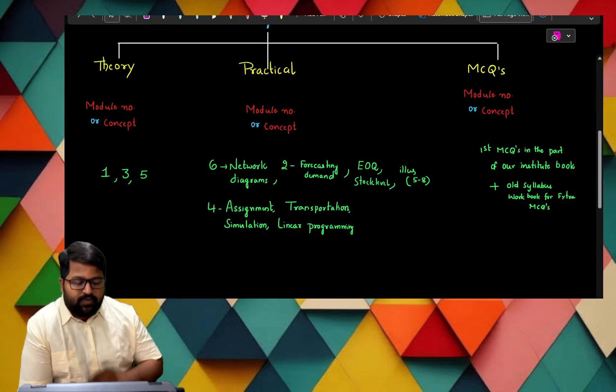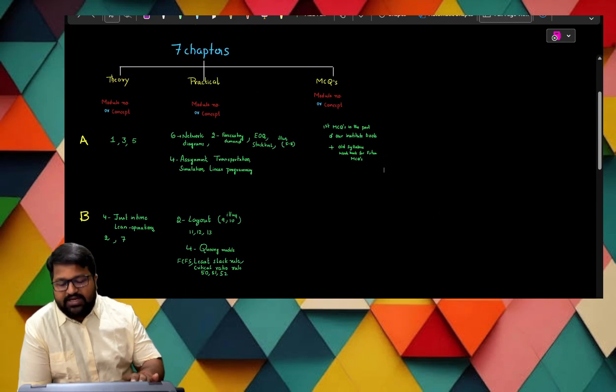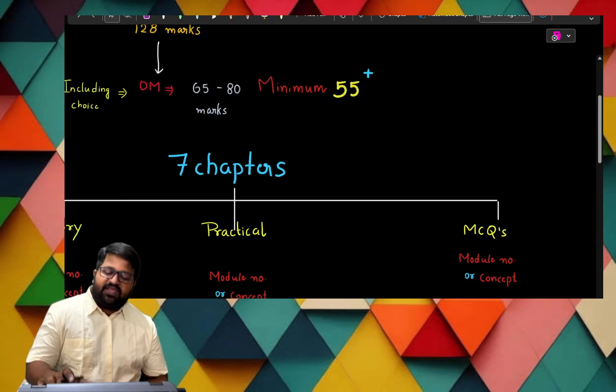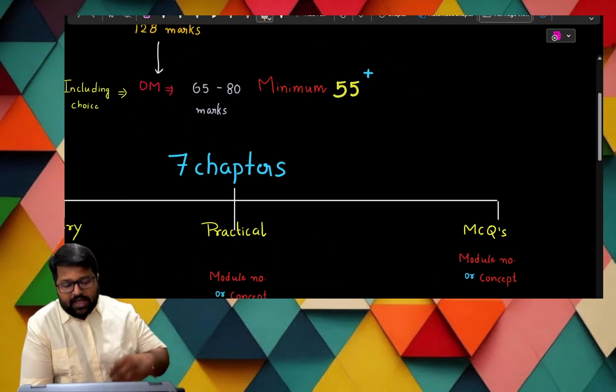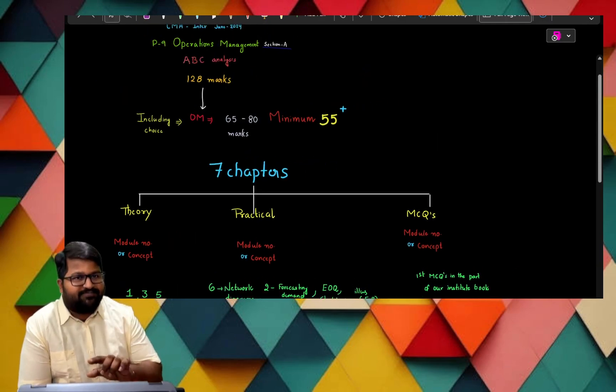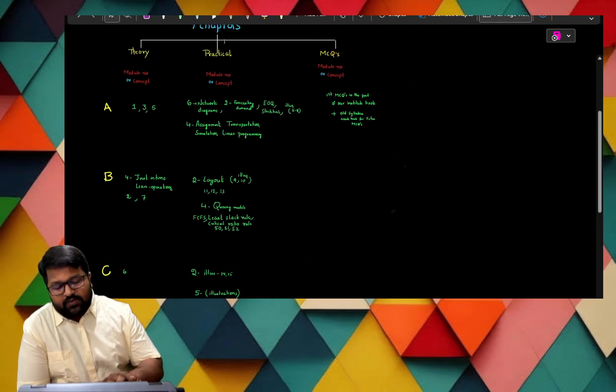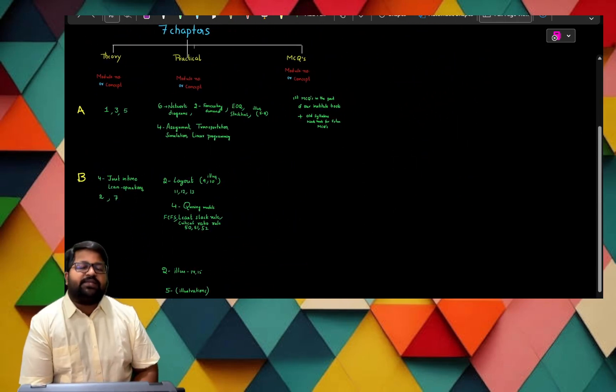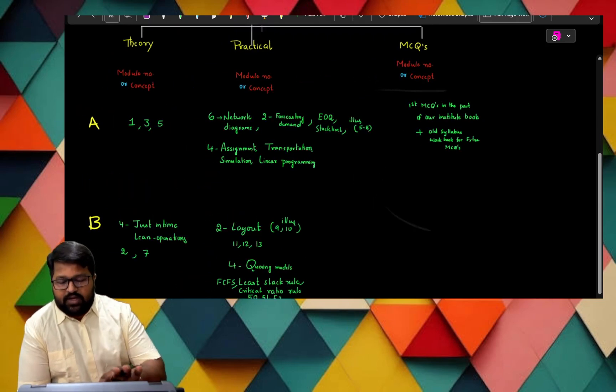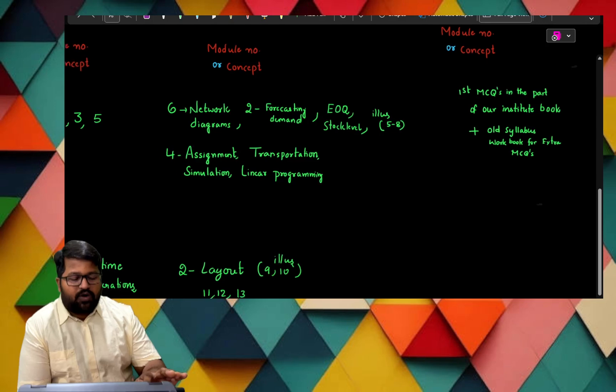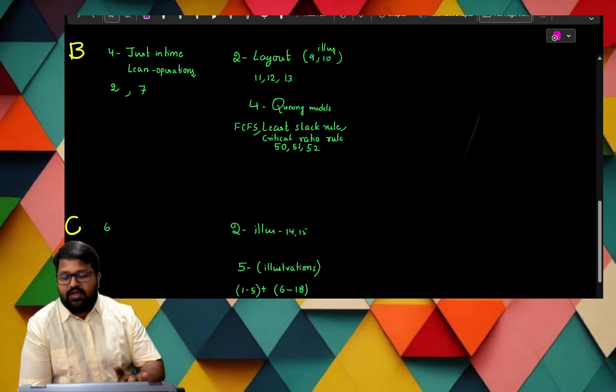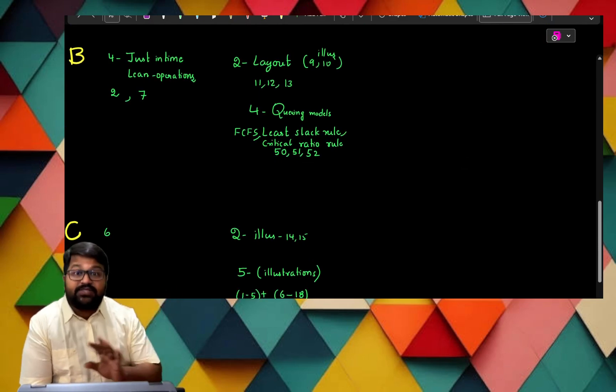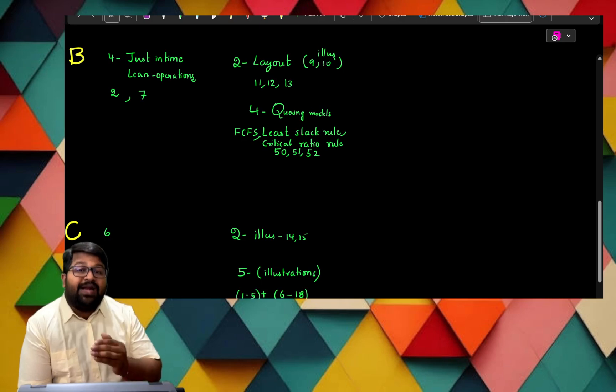This is my bifurcation for practical, theory, and MCQs. If you follow this, definitely I can give a guarantee of 55 plus. That is for sure. And I am telling about only OM part. Students may be having a thought that A is important, I will go with A, and B is okay, less important, and C is worst. That is not the criteria.